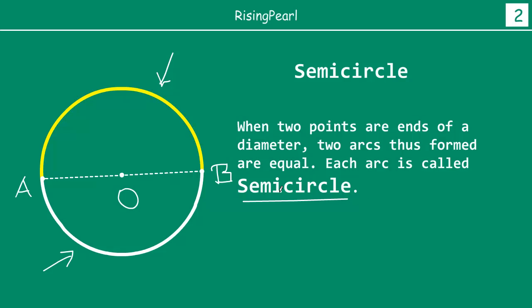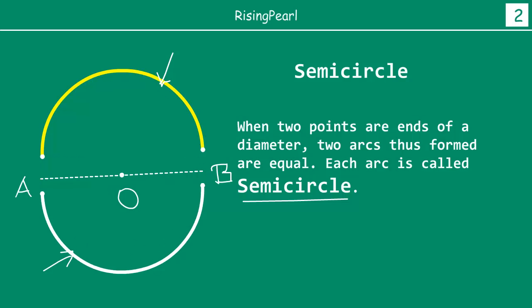Semi means half — half of a circle. So this is half of a circle and this is half of a circle. Just to illustrate the point, I have separated them a little bit so you can see — this is one half of a circle.